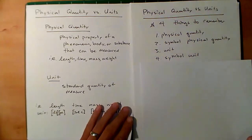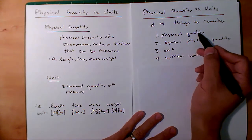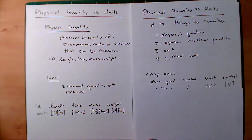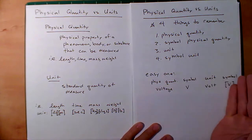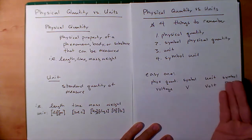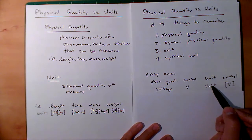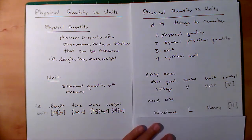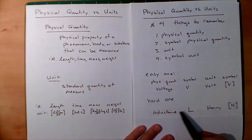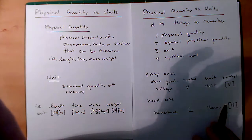There are four things I want you to remember: the physical quantity itself, the symbol for the physical quantity, the unit, and the symbol for the unit. For example, voltage V, volt V — an easy one where the physical quantity matches the unit. A harder one is inductance: the physical quantity is inductance, symbol is L (kind of weird), Henry is the unit, and the symbol is H.